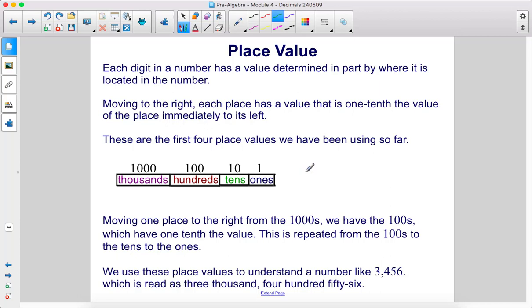Each digit in a number has a value determined in part by where it is located in the number. Moving to the right, each place has a value that is one tenth the value of the place immediately to its left. These are the first four place values we've been using so far: thousands, hundreds, tens, and ones.